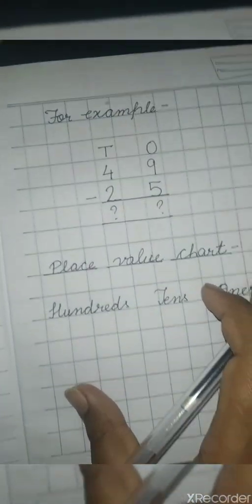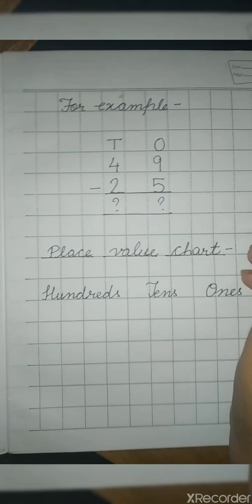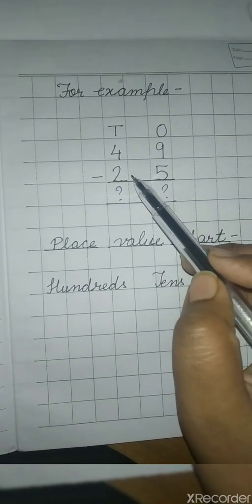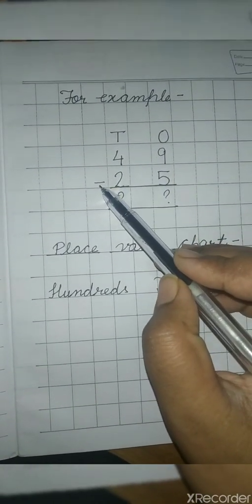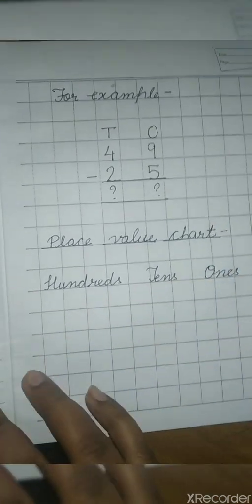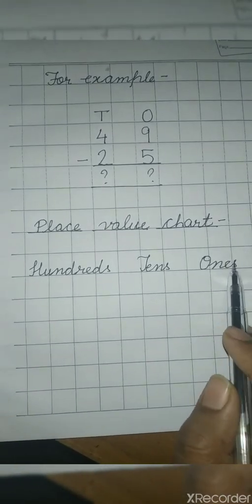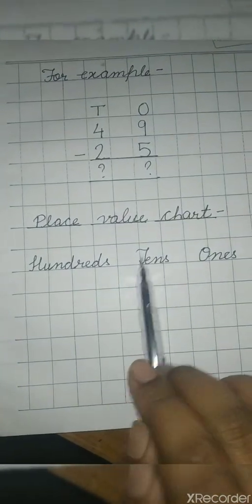Now we will do the next example — that is two-digit number subtraction. Here, O means ones and T means tens. There is a number 9 in the ones place and 5, and in the tens place 4 and 2. This is the symbol of subtraction. To solve this problem, we will write a place value chart, starting from the left side: Ones, Tens, and Hundreds.